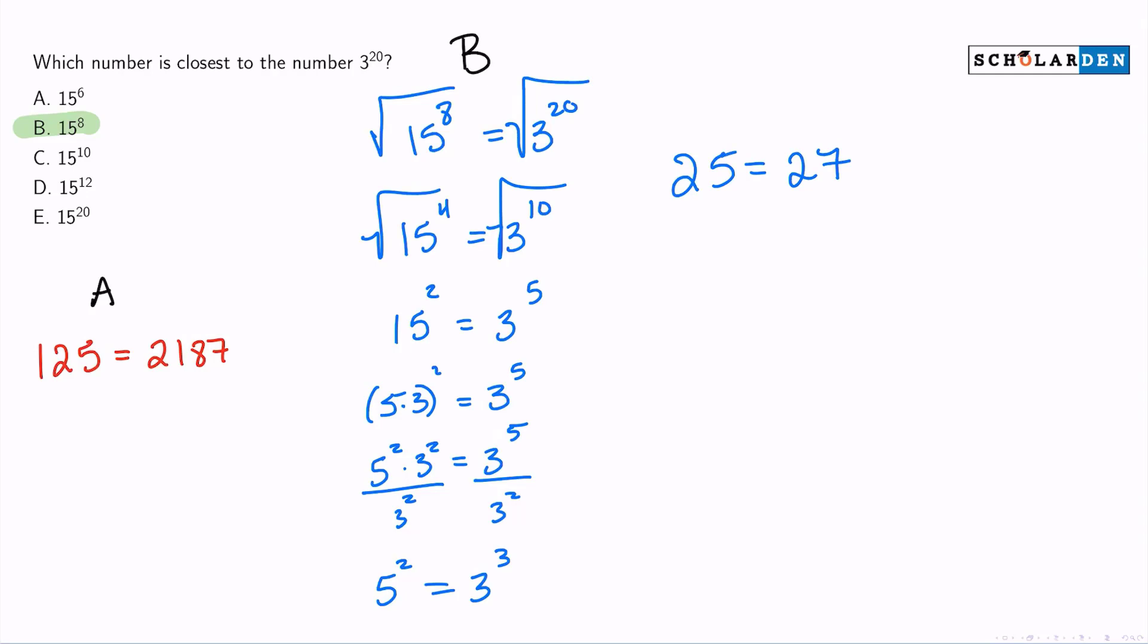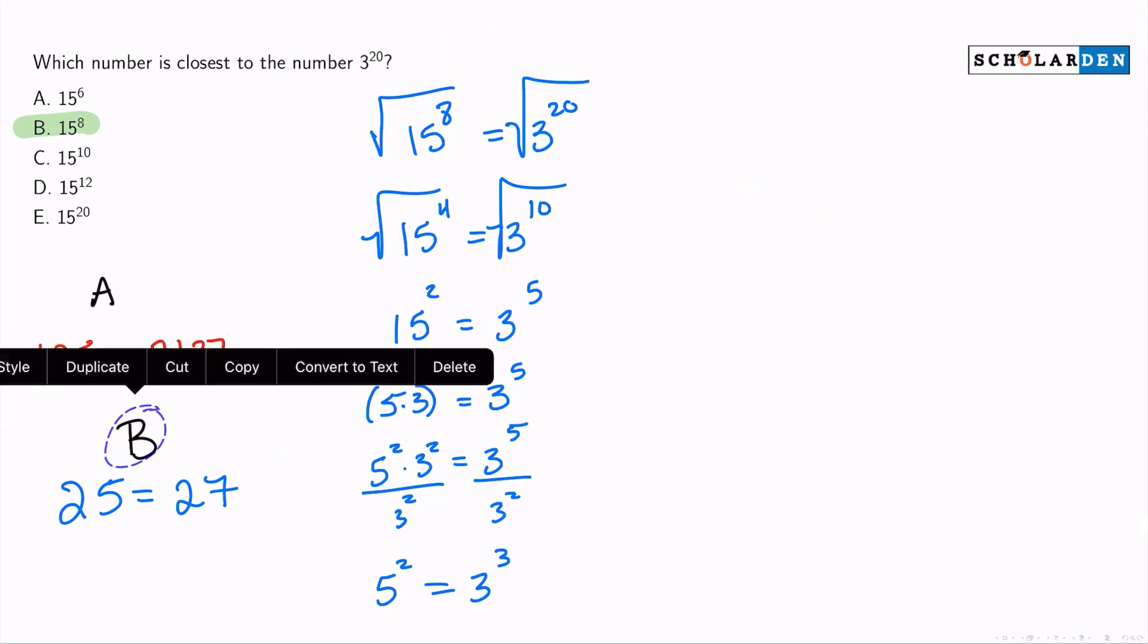Now 5 squared and 3 cubed, let's compare those. Well, 5 squared will be 25. 3 cubed is 27. Look at how close these two values are. Just take a moment. Look at how close they are. That is as close as we're going to get when comparing any of these answer choices. So I want to just keep that there for right now. That's answer choice B. Look at that comparison that we get. Look how close we are.